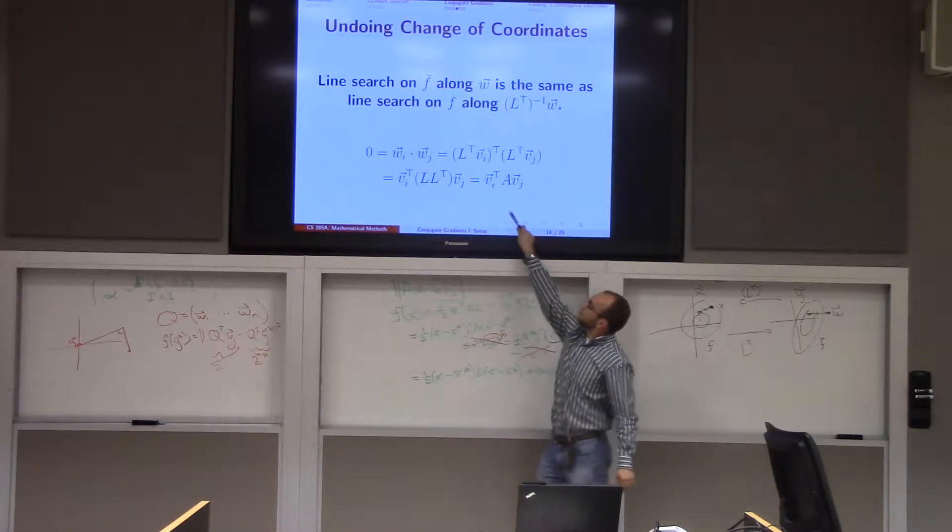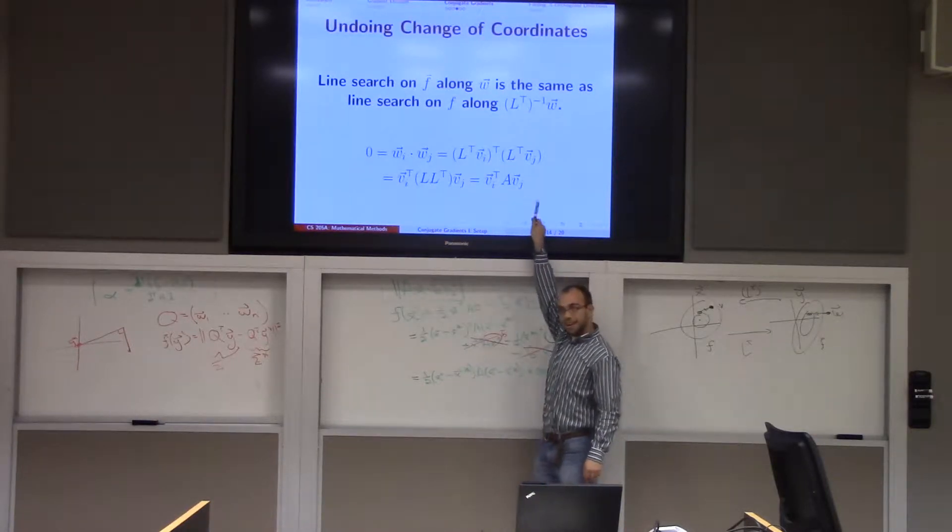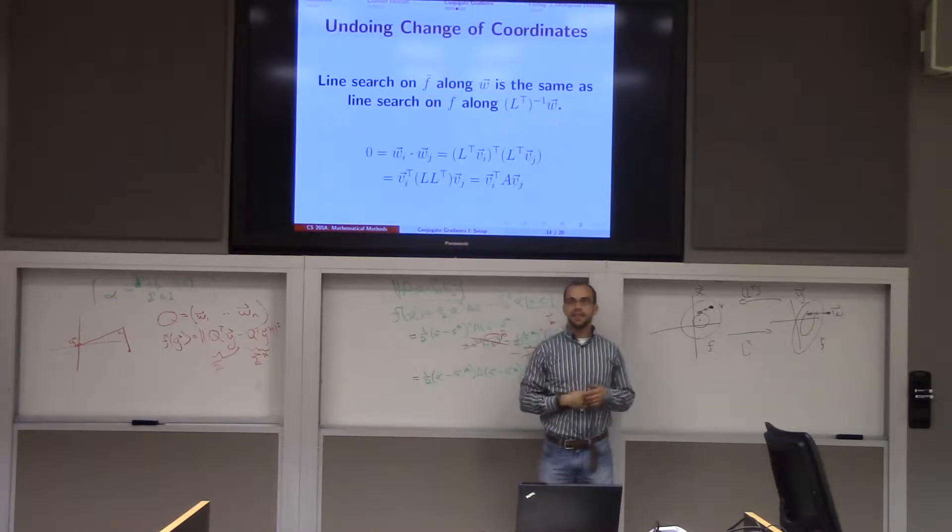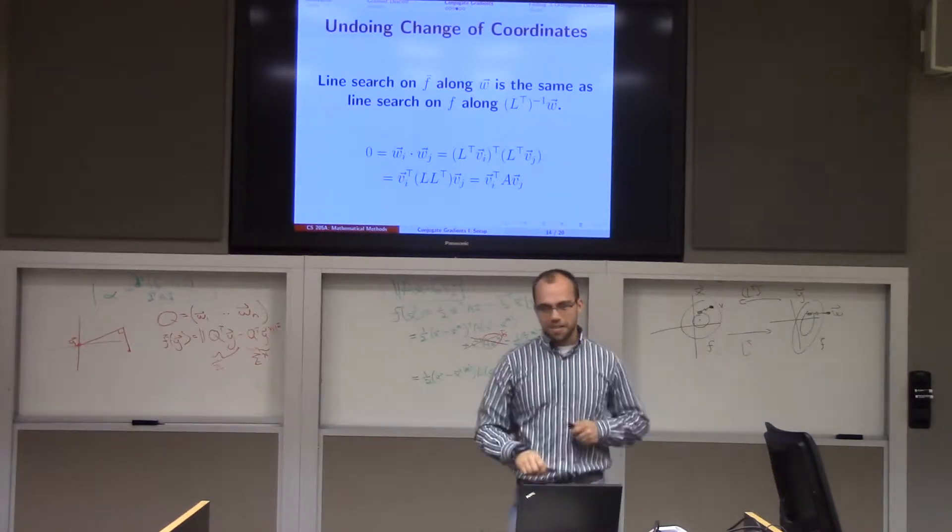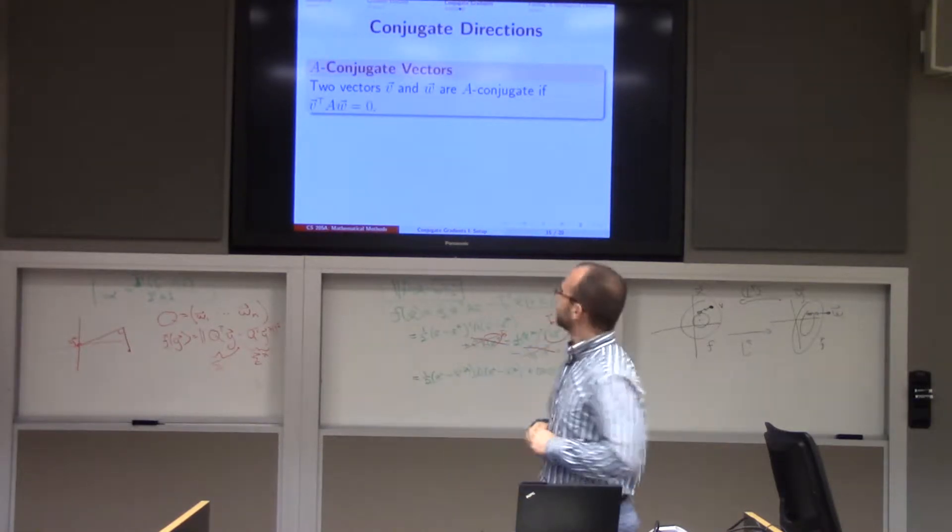W is orthogonal if and only if V_i transpose A V_j is equal to zero. This has a name. It's called conjugacy, surprisingly enough.